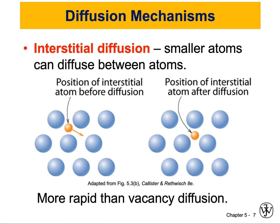The second mechanism is called interstitial diffusion. This happens when smaller atoms diffuse between larger atoms. As shown in the schematic, the orange atom is a smaller atom compared to the larger main-element atoms that compose the material. These smaller atoms can move from one location to another — that's interstitial diffusion.